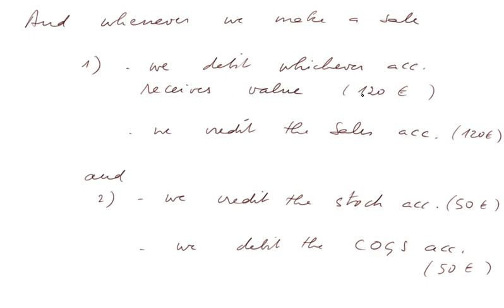whenever we make a sale, it's a bit more involved. We debit whichever account receives value. And we sell one cloth, it's 120 euros. And we credit, as we saw, the sales account, 120 euros. And at the same time, we credit the stock account, the value of the cloth leaving, 50 euros. And we debit the COGS account, 50 euros. So that later on, sales and COGS will appear in the trading account and will yield the gross profit of the year.